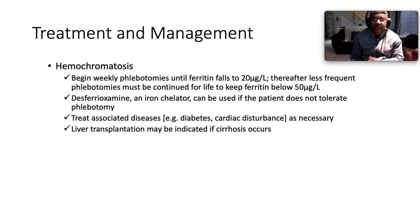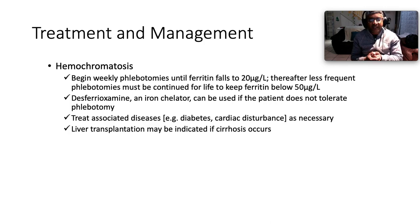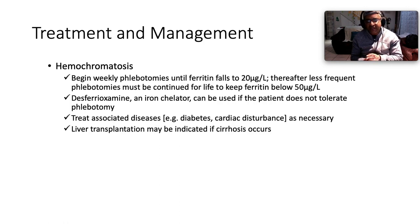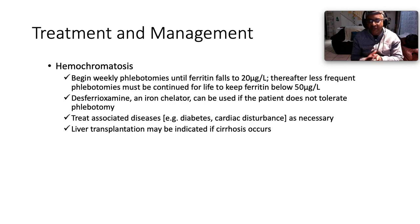Management of hemochromatosis: phlebotomy is the mainstay. Begin weekly phlebotomies until ferritin falls below 20 micrograms per liter, thereafter less frequent phlebotomies for life to keep ferritin below 50 micrograms per liter. The iron chelator desferioxamine can be used if the patient does not tolerate phlebotomy. Treat associated diseases like diabetes and cardiac disturbances. Liver transplant may be indicated if cirrhosis occurs.